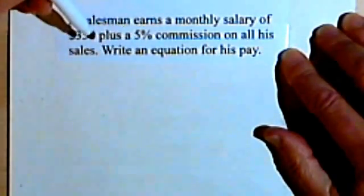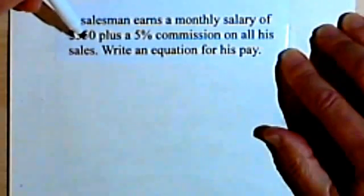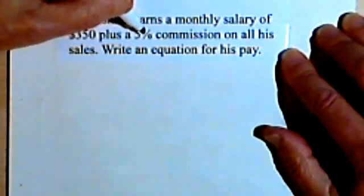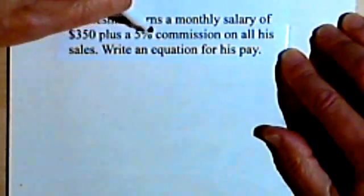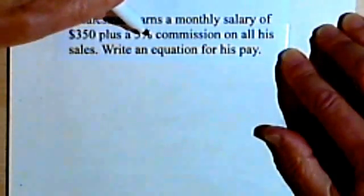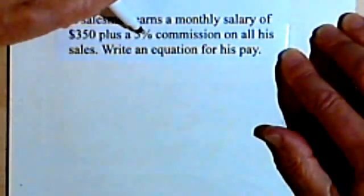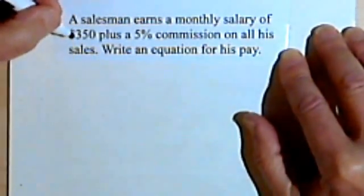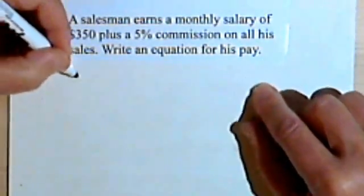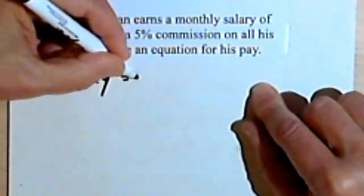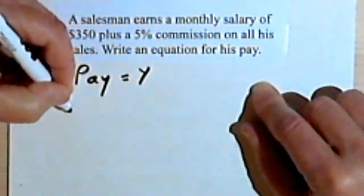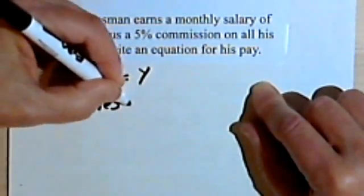So what this means is every month they give him $350 just for coming to work. They also give him 5% commission, or 5% of all the sales he makes. So the more he sells, the more money he makes. So the thing we're looking for, the y, is going to be his pay. Let's say pay is y, and the thing that's changing is his sales. The more he sells, the more his pay will be. So we're going to make that x.